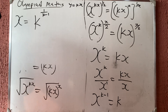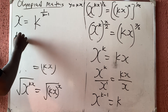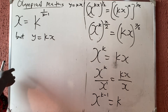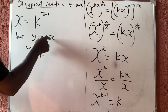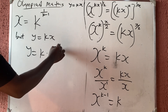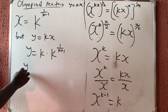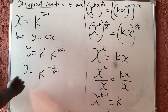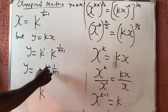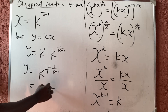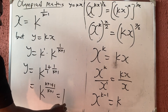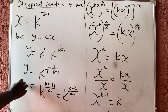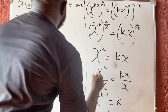To get y, recall that y is equal to kx. So y equals k times x, and x is k raised to the power one over (k minus one). By the laws of indices, k is k raised to the power 1, so y equals k raised to the power 1 plus one over (k minus one). The LCM gives us k raised to the power (k minus one plus 1) over (k minus one), which simplifies to k raised to the power k over (k minus one).